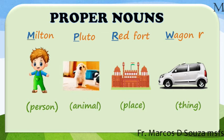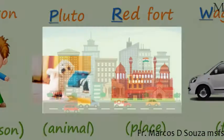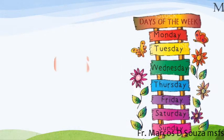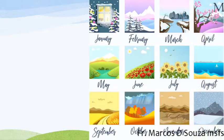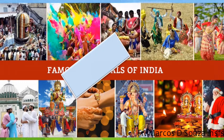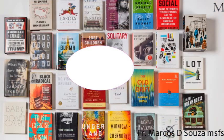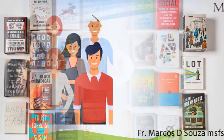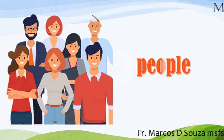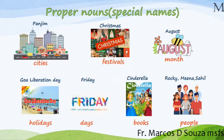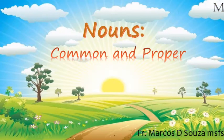All proper nouns begin with a capital letter. Remember: all names of cities, days, months, festivals, holidays, books, people, etc. are proper nouns. Nouns: common and proper.